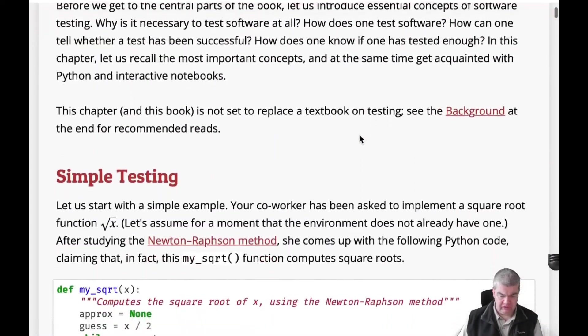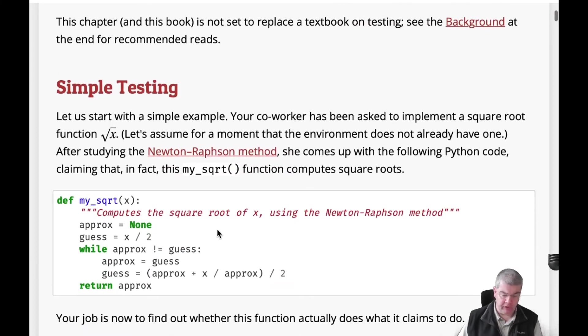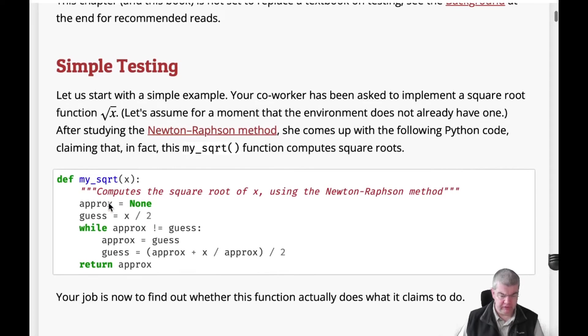You may notice that all of the code in this book actually comes in Python and here is one of our first Python examples. We have a function that computes the square root of a number x called my_sqrt and it uses the Newton-Raphson method.